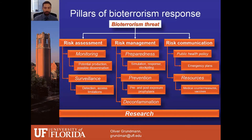The third pillar of the risk approach is risk communication. Public health policies establishing emergency plans have been crucial to establishing a national response that reaches across different agencies, specifically designed to potentially prevent and respond to a mass dissemination event where larger populations are affected. Resource allocations are central to the risk communication and the appropriate response to a bioterrorism attack.